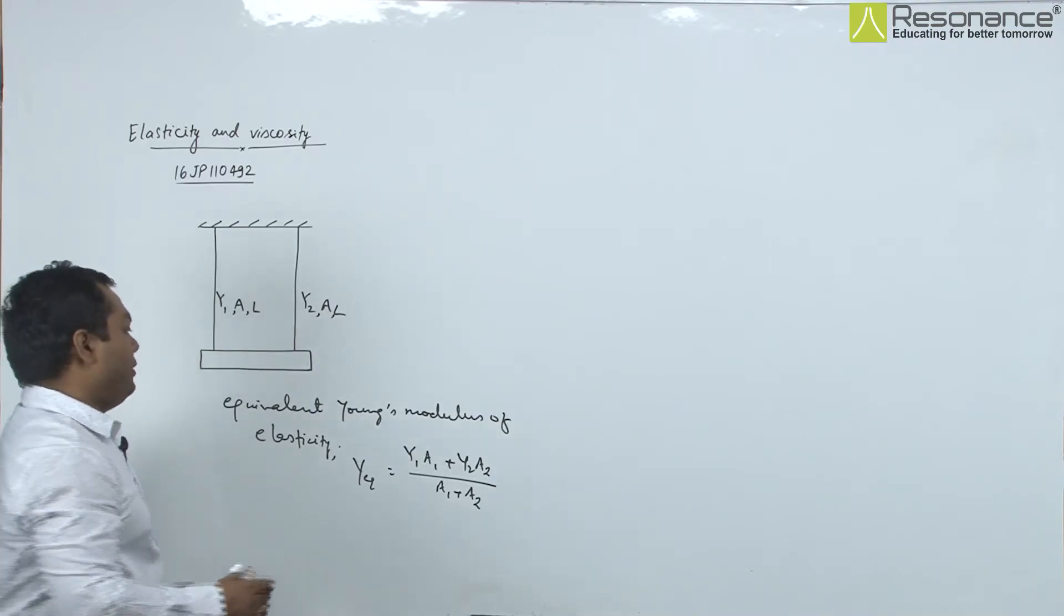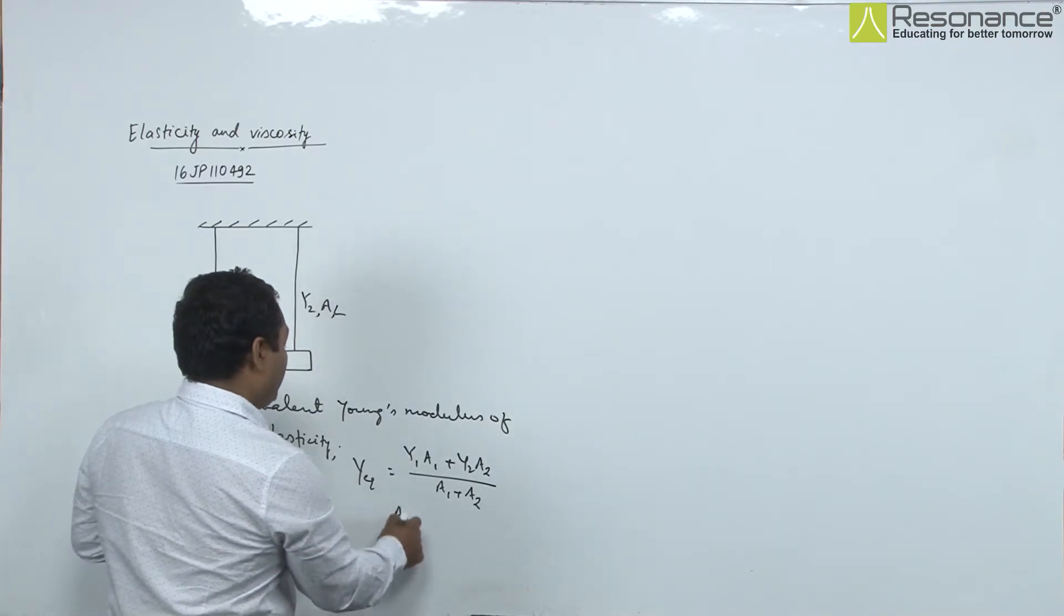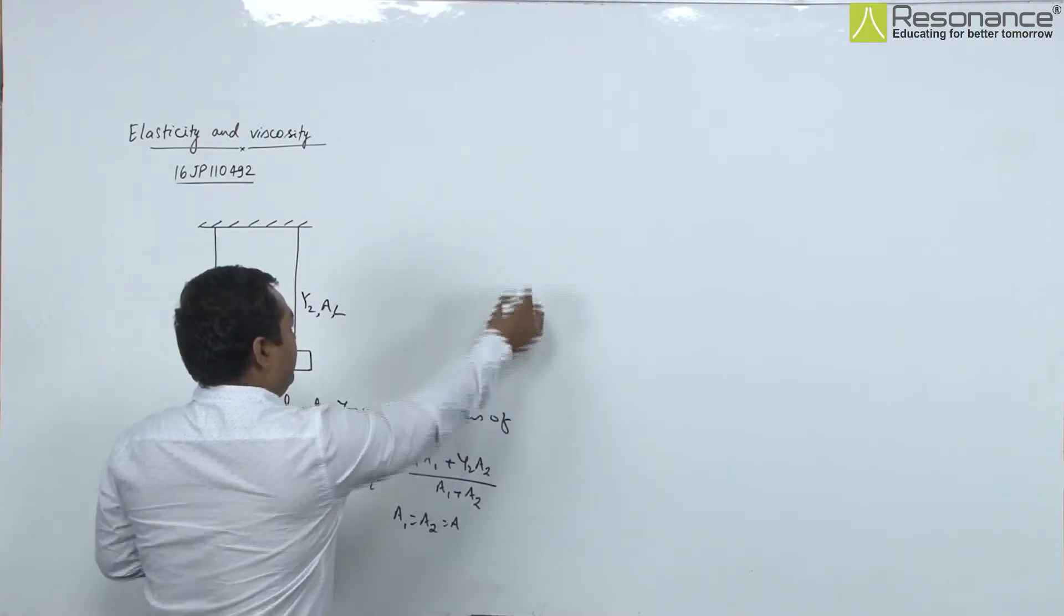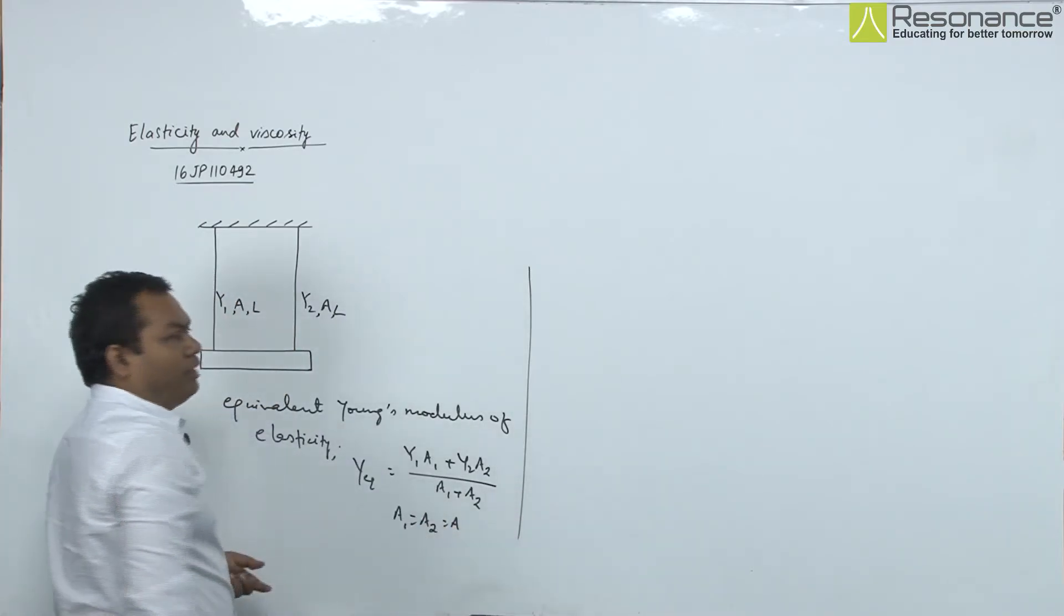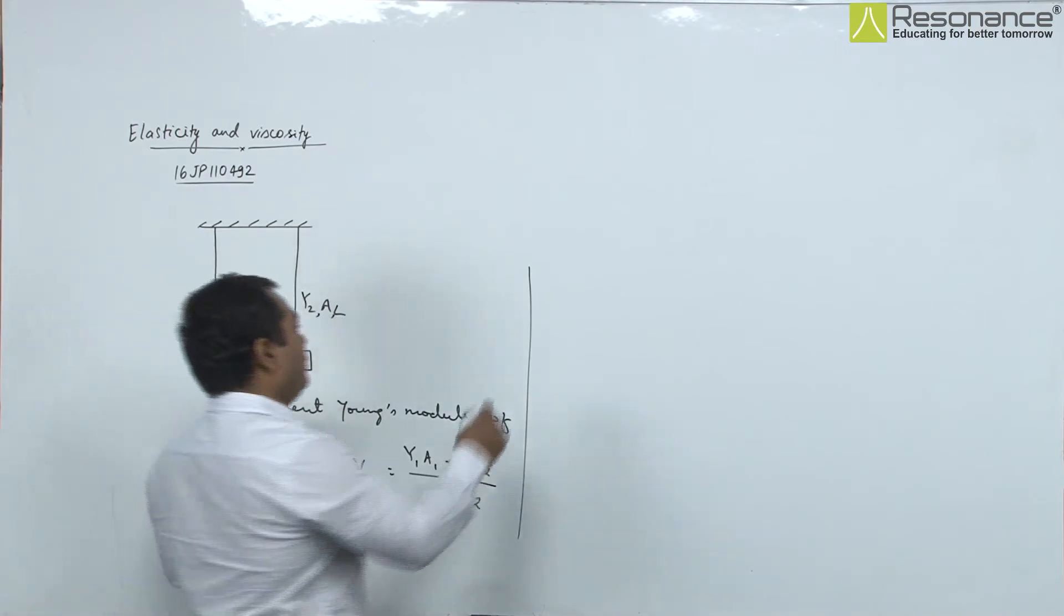Here a1 and a2 are equal, which is a. By putting this value, we can get y_equivalent.